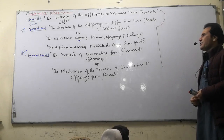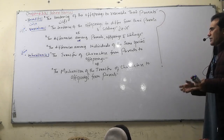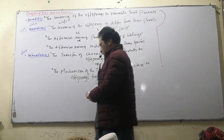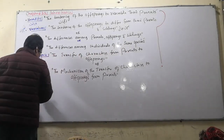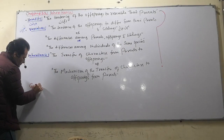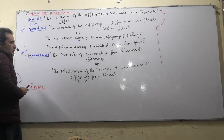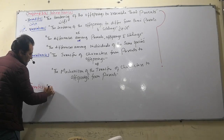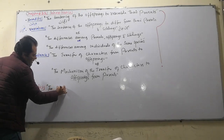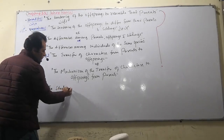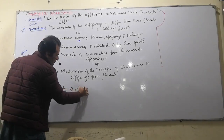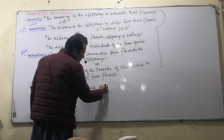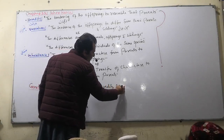Inheritance and variations are the main topics in genetics. Genetics, basically, in simple words, we define it here as the branch of biology in which we study inheritance, heredity, and variations.